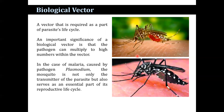The biological vector may be arthropods or any kind of organism where a part of the parasite's life cycle is completed. An important significance of the biological vector is that the pathogen can multiply to high numbers within the vector. In the case of malaria, caused by Plasmodium, the mosquito is not only the transmitter of the parasite — it also serves as an essential part of its reproductive life cycle, where the parasite completes its sexual or asexual cycle. So this type of vector not only acts as a vehicle but also allows the pathogen to multiply within the organism.